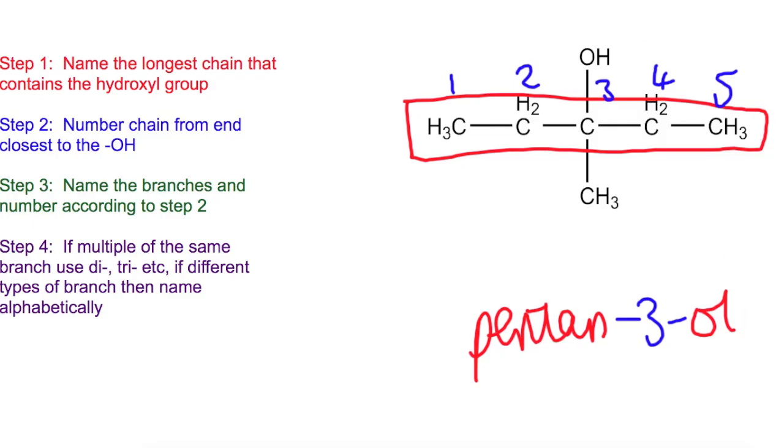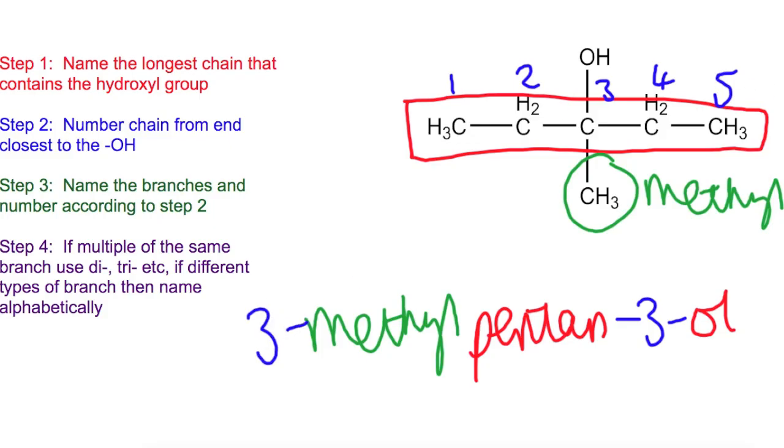Now we need to have a look at our branch. We've only got one single branch on this one here. So we've got this part here which is a methyl. And our methyl is on number three. So our full name will be 3-methyl, pentan, 3-ol.